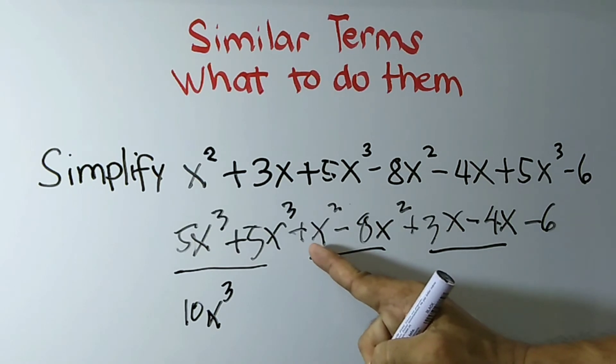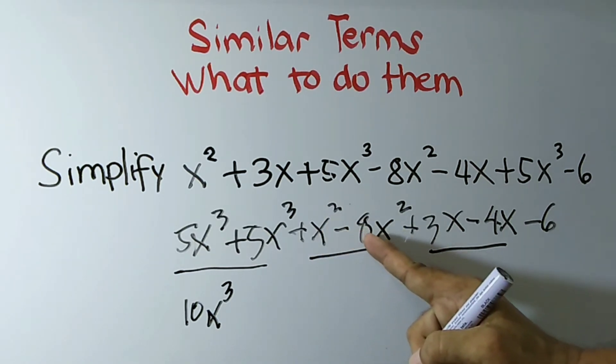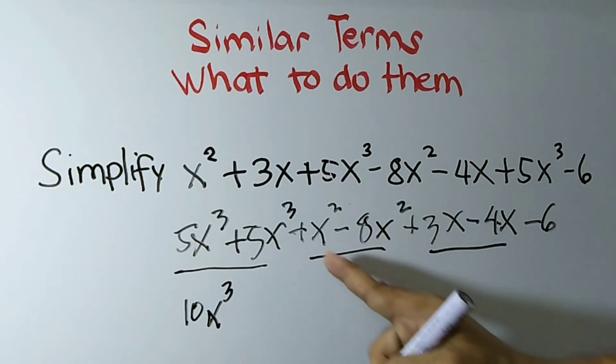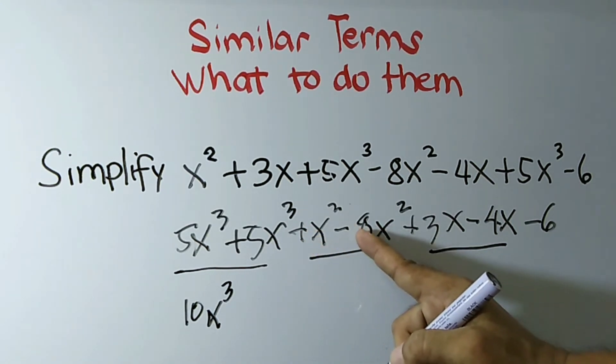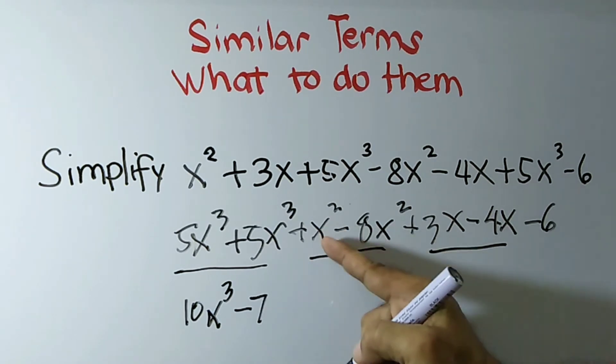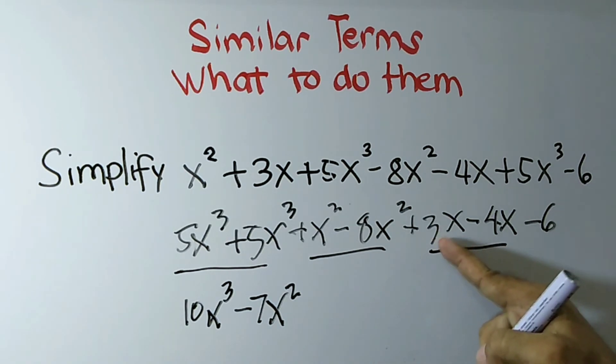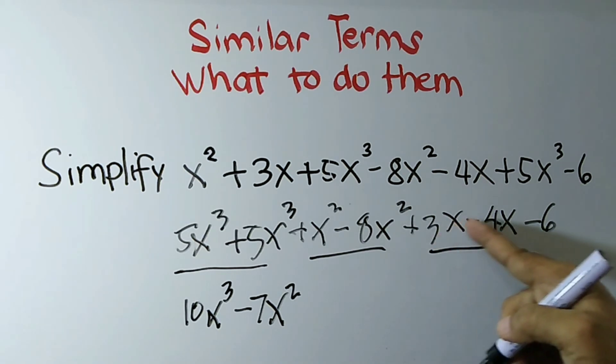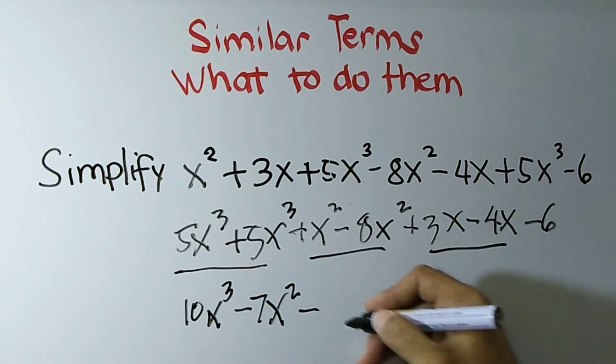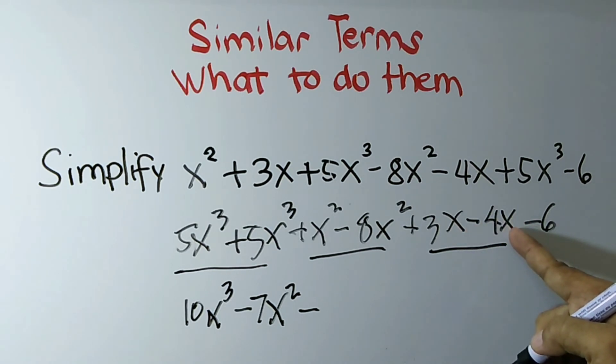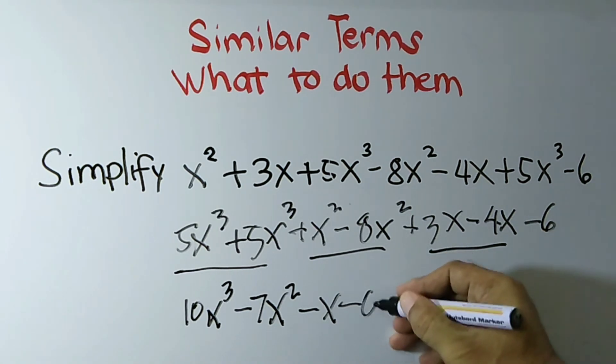Here we are going to combine x squared plus negative 8x squared, so we have 1 minus 8, that is negative 7, and bring down the literal coefficient x squared. And here we have 3x plus negative 4x, so 3 plus negative 4, that is negative 1, and bring down the literal coefficient which is x. You don't need to write 1 here, it's understood that before x is negative 1. And then bring down negative 6.